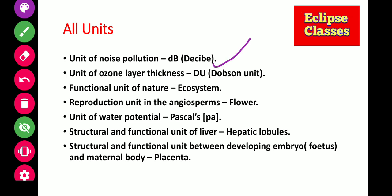Unit of ozone layer thickness — जब हम ozone layer thickness को measure करेंगे, किस unit में करते हैं? Dobson unit. Smallest form क्या हो जाता है इसका? D-U. Functional unit of nature — हमारे nature का functional unit क्या है? Ecosystem है.